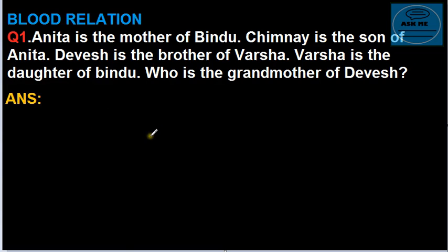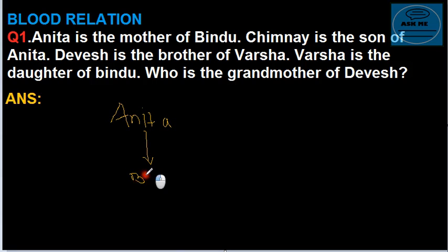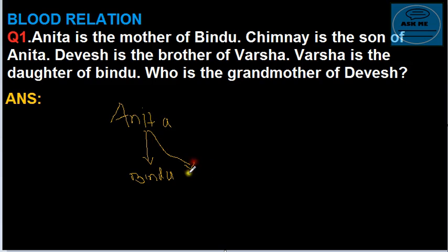So let me draw the figure. Let me write here: Anita. Anita is the mother of Bindu. And Chimney is the son of Anita — Chimney is the brother of Bindu.